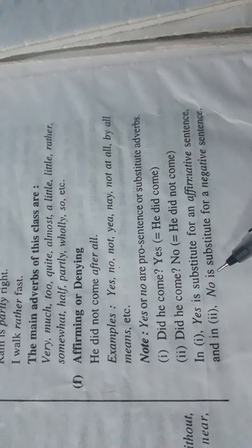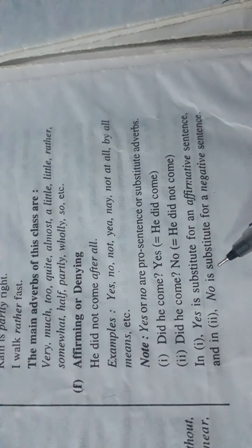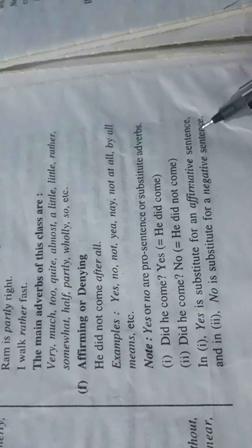Did he come? No. No is substitute for the sentence he did not come. In sentence one, yes is substitute for an affirmative sentence. And no is a substitute for a negative sentence.